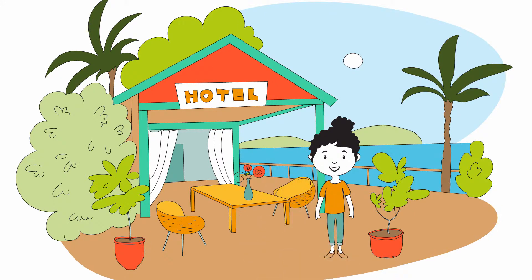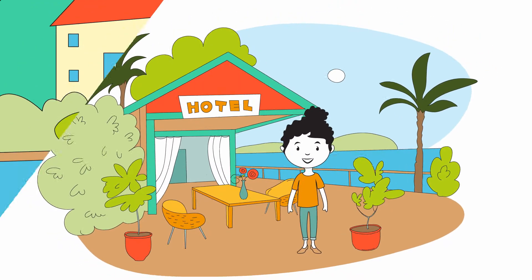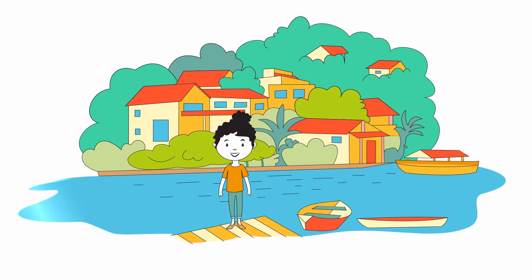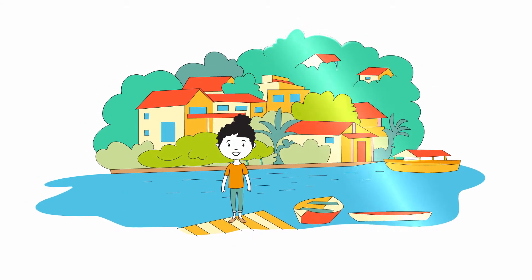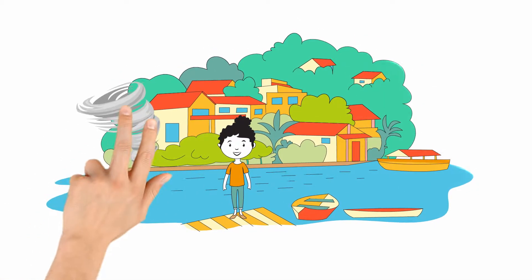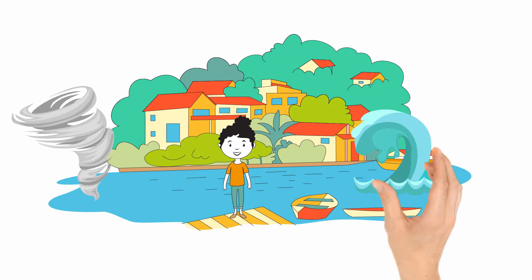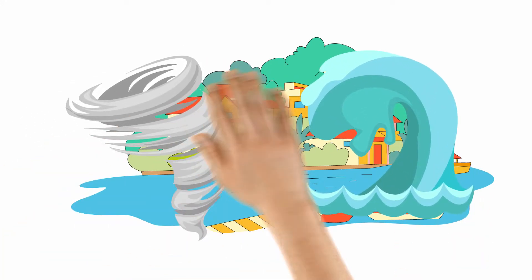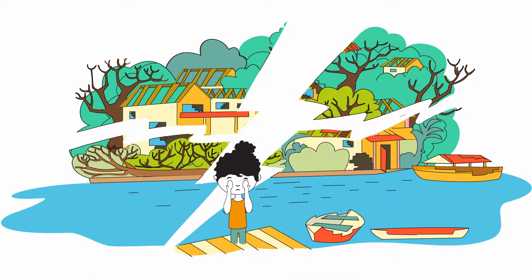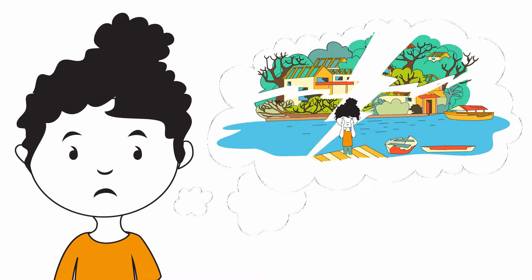Meet Mia. Mia works as a small hotel owner renting rooms to people who visit her town, known for its beautiful nature and fresh produce. However, life there is not always easy, as her home is prone to hurricanes and flooding. These natural hazards can greatly damage people's houses, businesses and resources, and can even push them into a poverty trap.